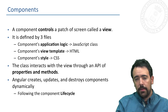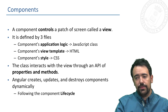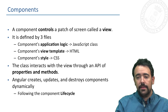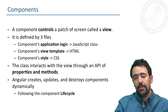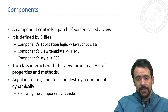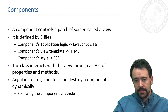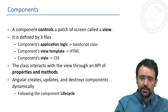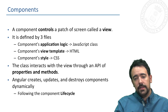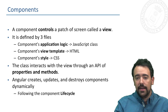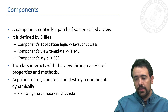An Angular component is a part of the application that controls a patch of the screen called a view. An Angular component is defined by three files: the first one defines the logic of the component and is just a JavaScript class, the second one defines the view and is an HTML file with several extensions that Angular provides, and the third one is a CSS file that defines the style of the view.